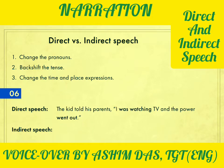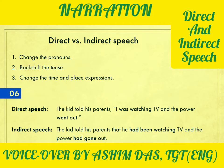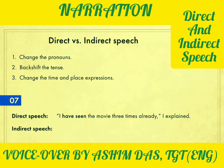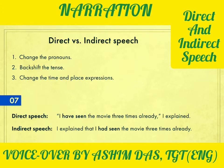Number six is a little challenging: the kid told his parents, 'I was watching TV and the power went out.' The answer is: the kid told his parents that he had been watching TV and the power had gone out. 'Was watching,' a past continuous verb, gets backshifted to past perfect continuous: 'had been watching.' And 'went out,' which is simple past, becomes 'had gone out.' Sentence seven: 'I have seen the movie three times already,' I explained. The answer: I explained that I had seen the movie three times already. 'Have seen' becomes 'had seen' — a present perfect verb changes to past perfect when backshifted.